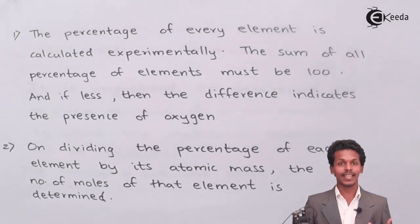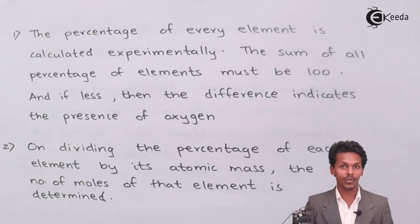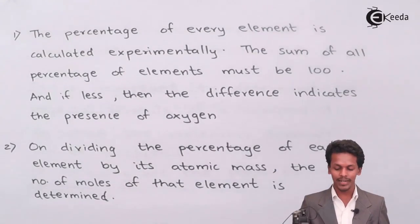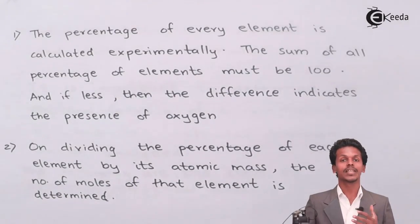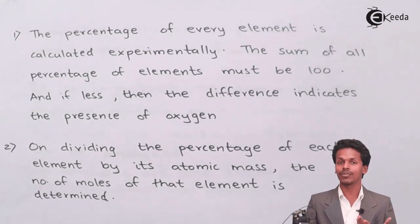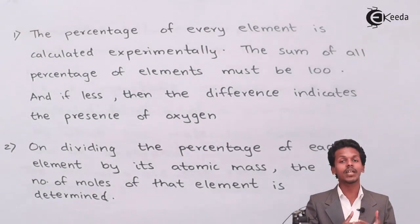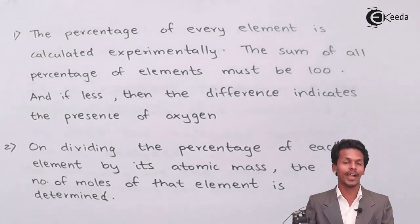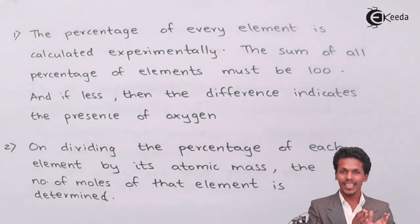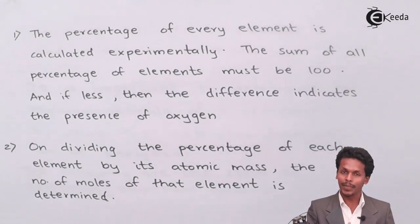Step 1: The percentage of every element is calculated experimentally. Suppose we have a particular compound containing carbon, hydrogen, and oxygen. We determine how much of each element is present — that is, we determine the percentage by mass of each element experimentally.